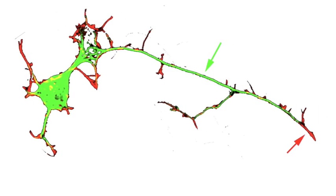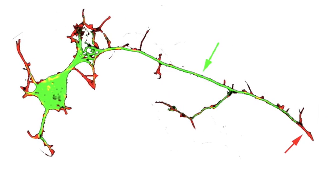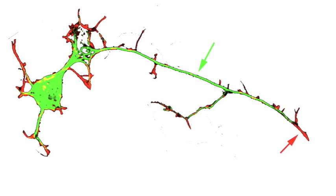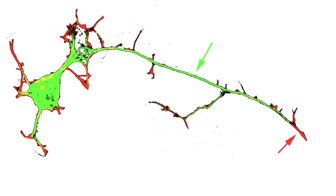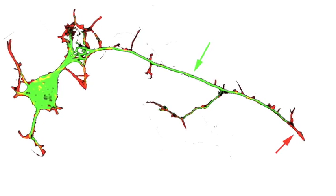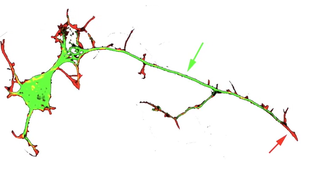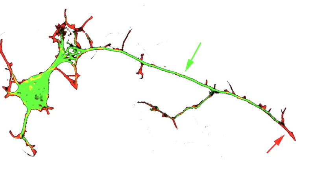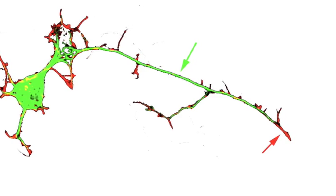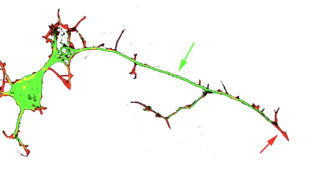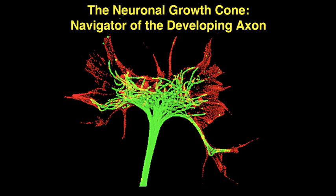Neuronal circuits are built during fetal life. The tips of growing axons, called growth cones, in red, navigate through developing tissues to their synaptic targets. This movie tells the story of the neuronal growth cone, the navigator of developing axons.